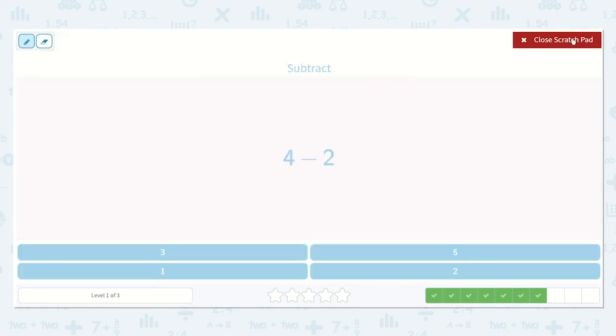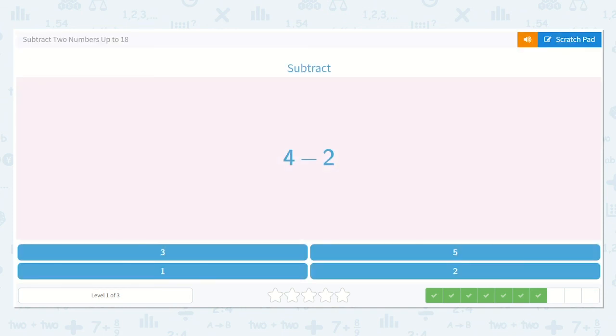Alright, now we have 4 minus 2. So I'm going to draw 4: 1, 2, 3, 4. And I'm going to subtract 2: 1, 2. How many do I have left? Yes, 2. Great.